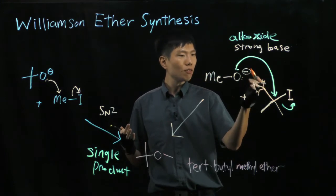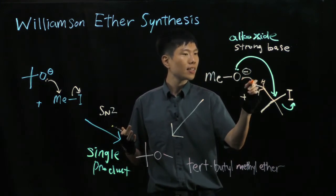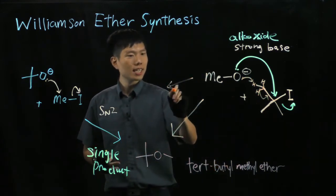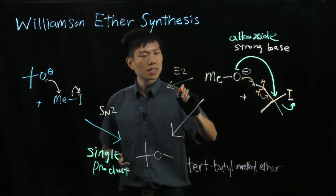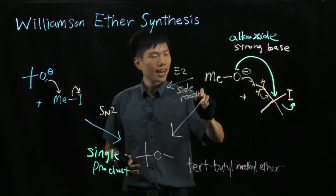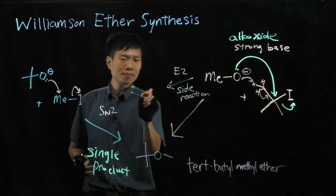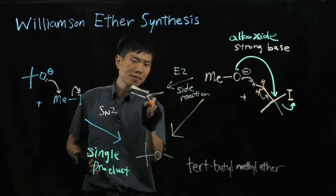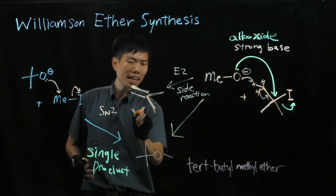So, potentially, I could follow my orange color pen. And what you see is actually an E2 side reaction. And the product would be an alkene. Don't forget the iodide.